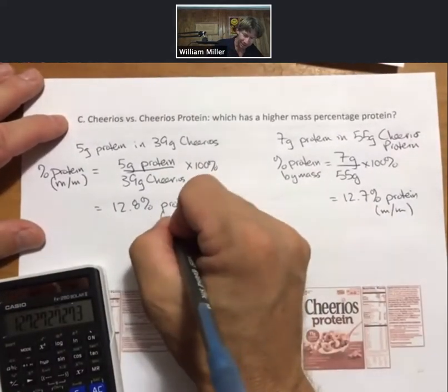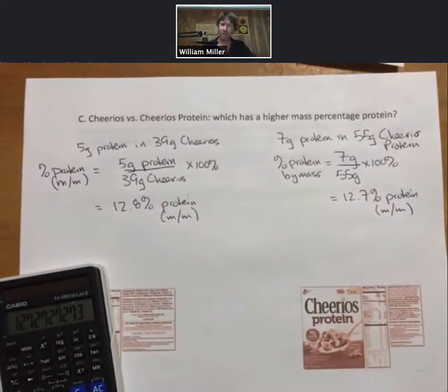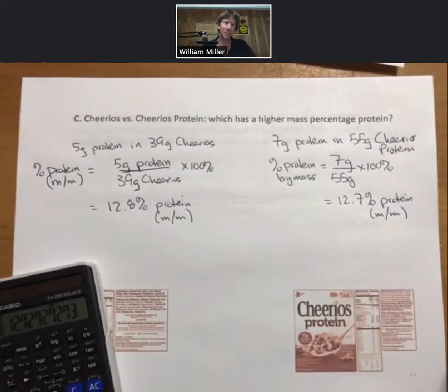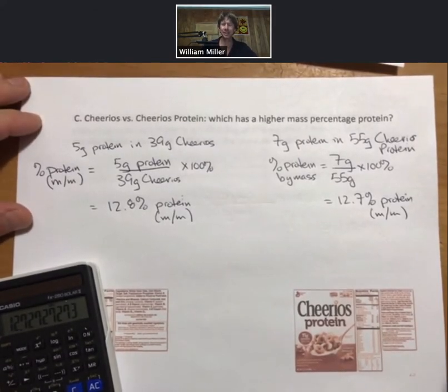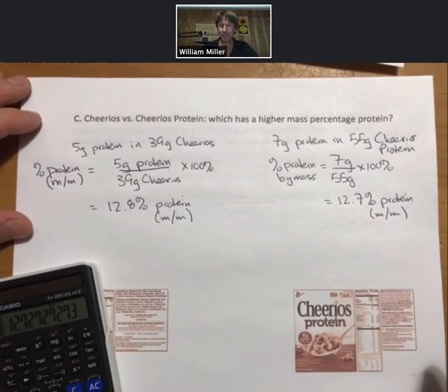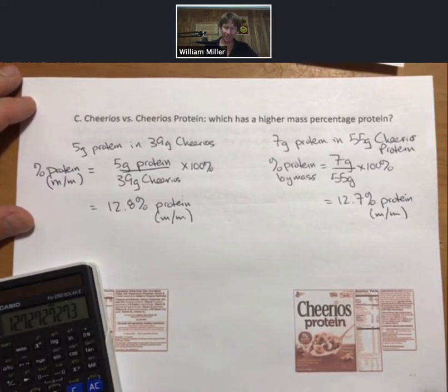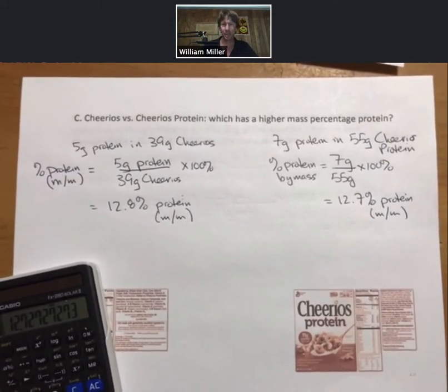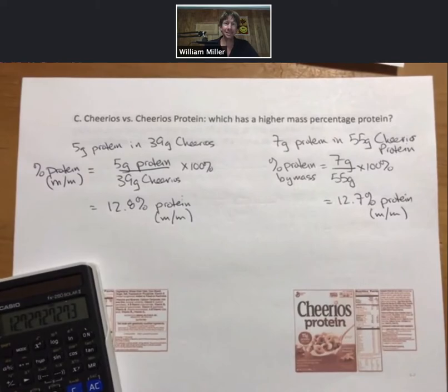So you can buy Cheerios Protein and if you eat the same amount you'll get the same amount of protein. If you google it, you will see they were accused of some deceptive advertising tactics. There may have been a lawsuit involved, I was no part of that. But in general, we can analyze, when we do chemical calculations, we can analyze real world problems and see the truth in advertising statements for different manufacturers' claims, which I think is pretty cool.